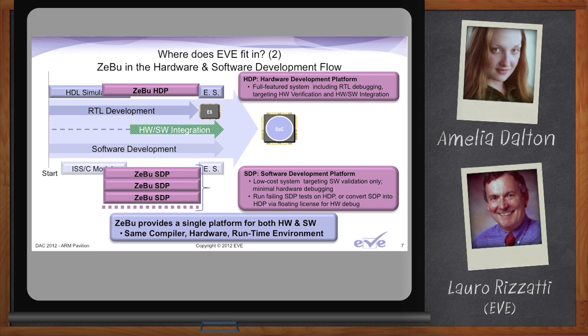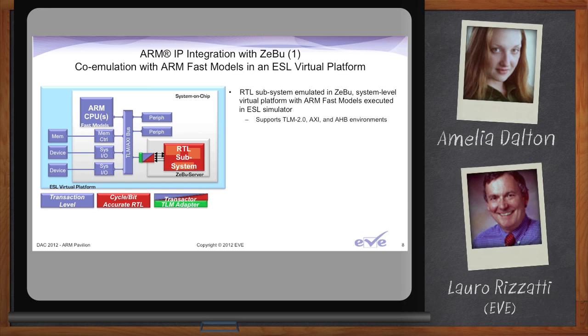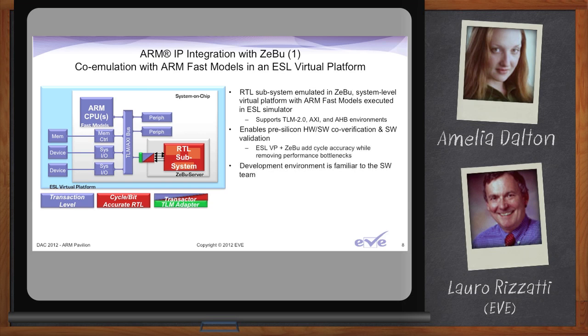The typical design flow today starts at the ESL level. If you have an ARM core, or multiple ARM cores — multi-core is very popular today — the design will use ARM fast models for modeling the core. At one point in the design process you start to have RTL blocks: legacy blocks, purchased IP, or synthesized blocks from your ESL design. The moment you plug an RTL block into an ESL virtual environment, performance takes a big hit. That is where an emulation system running fast and supporting transaction interfaces plays a major role to avoid that drop in performance.